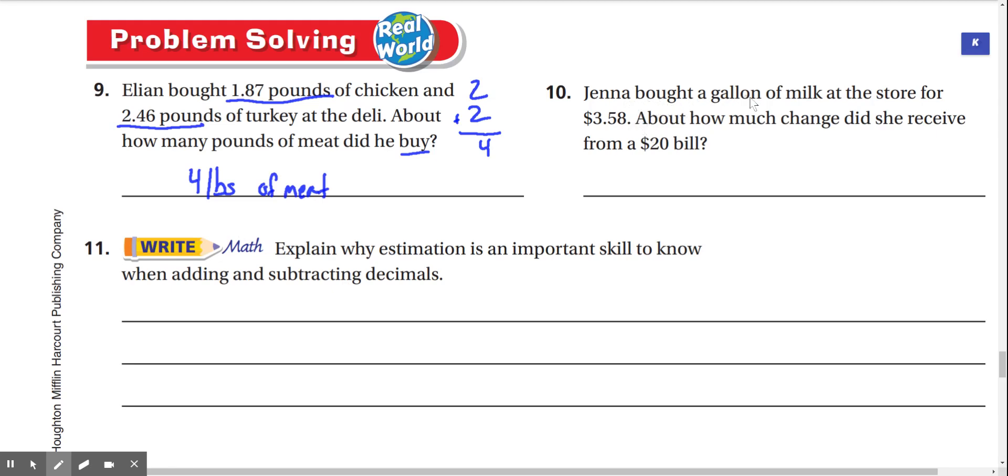Number 10, Jenna bought a gallon of milk at the store for $3.58. About how much change did she receive from a $20 bill? Well, 3.58 rounds to about 4. And if we're looking for how much change she received, we're going to take 20 and subtract by 4. We can't subtract 0 from 4, so we've got to regroup to 1. This becomes 10. 10 minus 4 is 6. 1 minus nothing is 1. So we've got $16 of change, about.